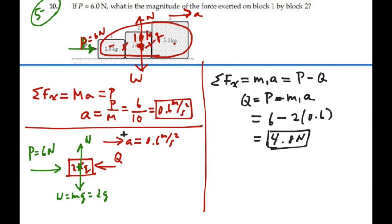So the force exerted on block 1 by block 2 is the value of Q, which is 4.8 Newtons.